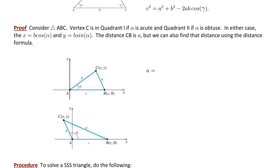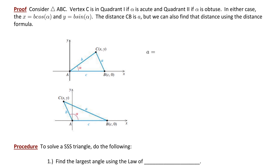Now let's look at where the law of cosines comes from and explore the proof. Consider triangle ABC. There are two possible orientations: vertex C will be in quadrant 1 if angle alpha is acute, and vertex C will be in quadrant 2 if angle alpha is obtuse. In either case, X equals B cosine alpha and Y equals B sine alpha.